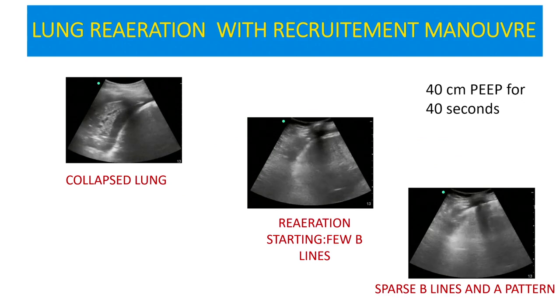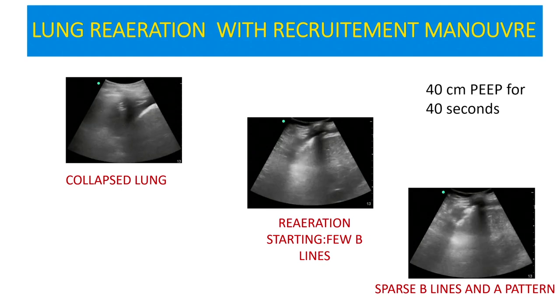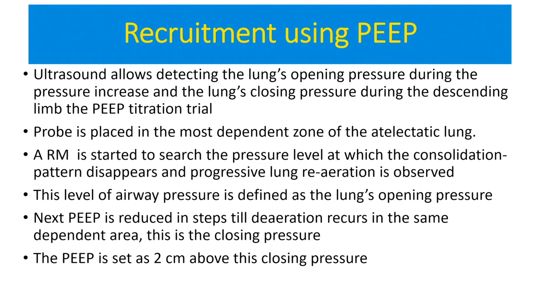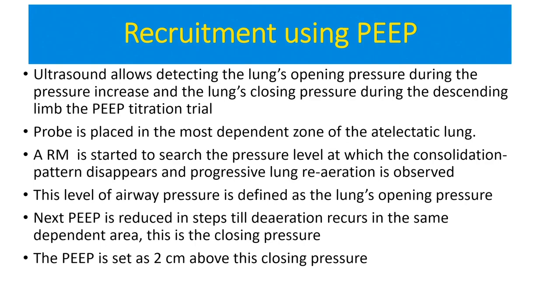There are a number of papers supporting a good correlation with CT volumetric analysis. This is a representation of how a consolidated lung, given some amount of PEEP, is seen opening up — changing from a solid pattern to a more aerated pattern. We can actually determine the opening pressure of a specific area of the lung: place a probe, give a recruitment, and observe the change from consolidated to C to B2 to B1 to A. That is the opening pressure. You then set the PEEP and start reducing — once the area starts to collapse again, stop and set PEEP two centimeters above that.